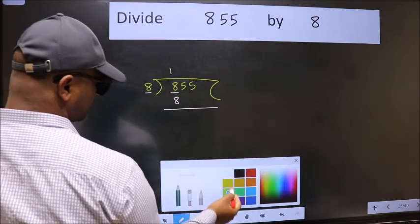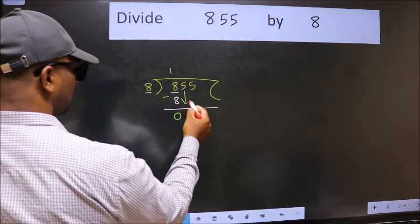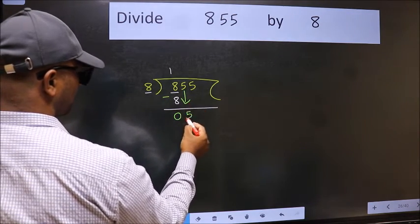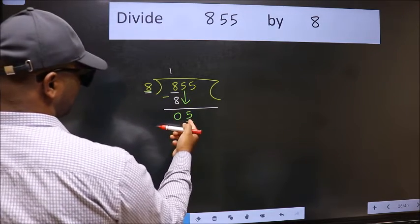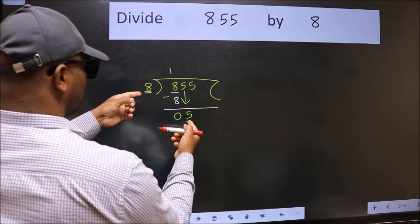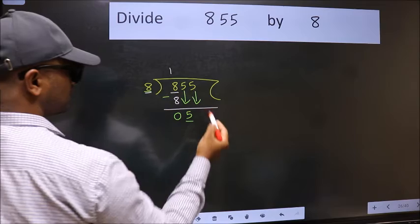Now we should subtract. We get 0. After this, bring down the beside number, so 5 down. Now here we have 5 and here 8. 5 is smaller than 8, so we should bring down the second number.